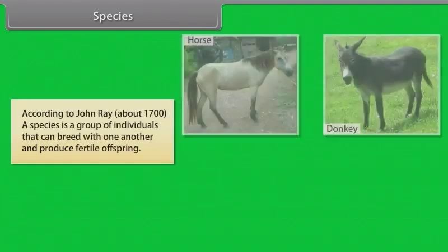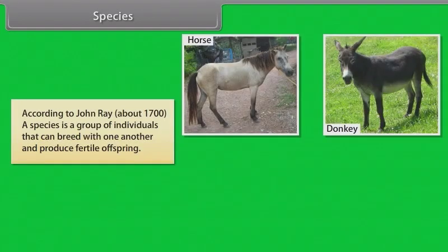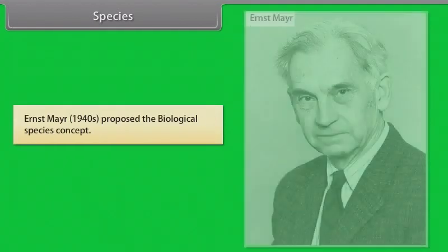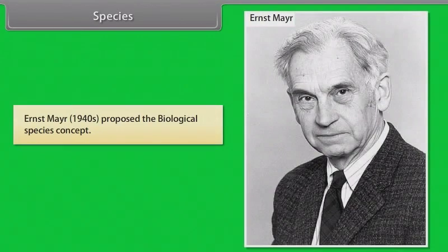According to John Ray, around 1700, a species is a group of individuals that can breed with one another and produce fertile offspring. Ernst Mayr, in the 1940s, proposed the biological species concept.